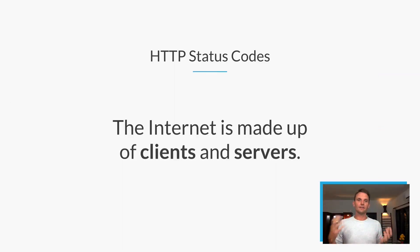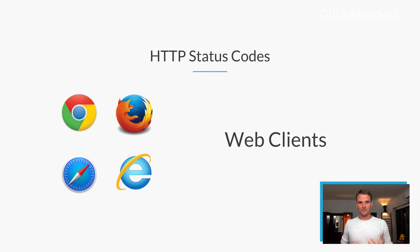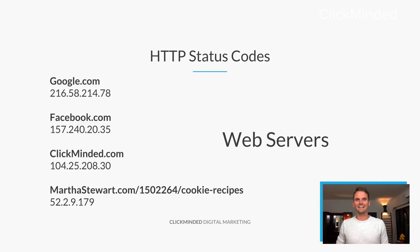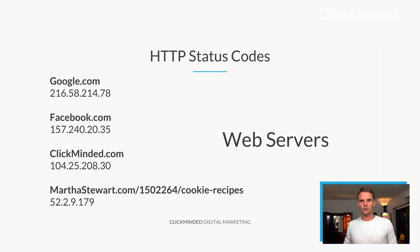Before we dive deep into 301 redirects, I want to talk a little bit about web protocol basics first. The internet is made up really of two core things, and that's clients and servers. You have web clients — that's your browser. Maybe it's Chrome, maybe it's Firefox, maybe it's Safari, maybe it's Internet Explorer — but you're usually accessing the internet through one of these clients. Whenever you request a website, you're usually making a request from a web server. You make a request, and the server responds. That's happening every single time you're clicking a link.